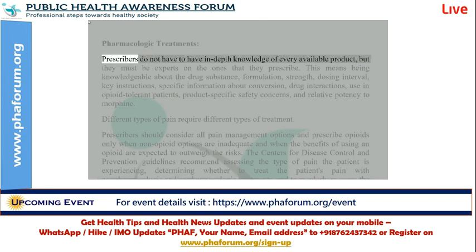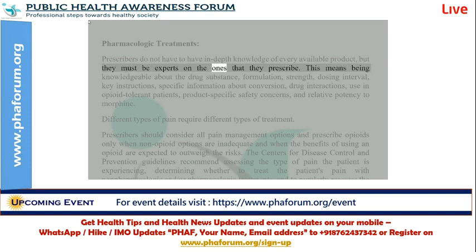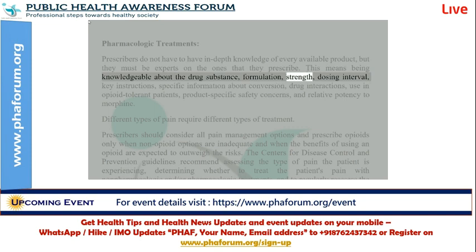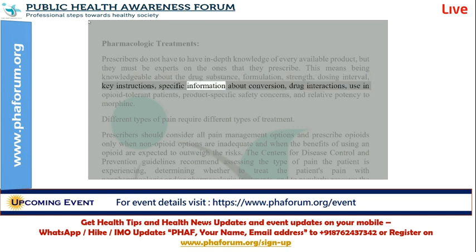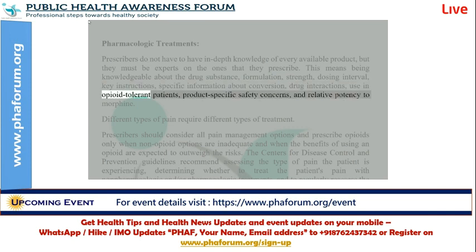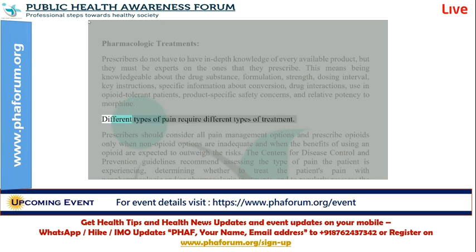Pharmacologic treatments: prescribers do not have to have in-depth knowledge of every available product, but they must be experts on the ones they prescribe. This means being knowledgeable about the drug substance, formulation, strength, dosing interval, key instructions, specific information about conversion, drug interactions, use in opioid tolerant patients, product specific safety concerns, and relative potency to morphine. Different types of pain require different types of treatment.